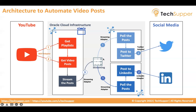For example, if I have ten playlists, I will get videos from those ten playlists and put them into the stream. Once the video posts are in the stream, I can use that stream, connect it to any integration, take the data and put it wherever I want. Once the data is available in the streaming service, I have two integrations created separately which regularly poll the stream via the OCI Streaming adapter and use the Twitter and LinkedIn adapters to post there. You can also add one more integration connecting to the same stream to post on Facebook or any other social site.